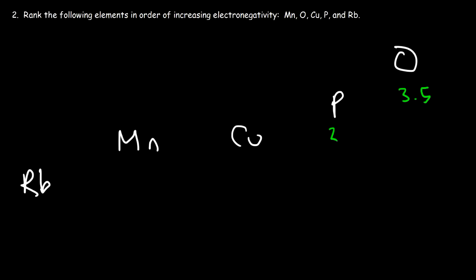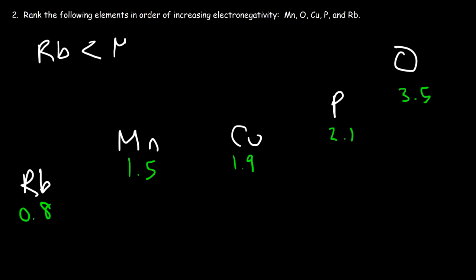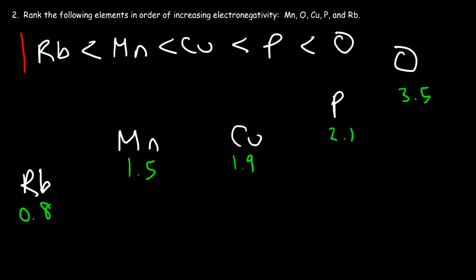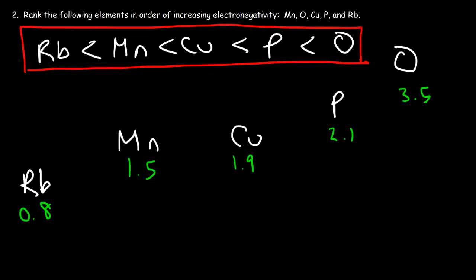The electronegativity value of phosphorus is 2.1, copper is 1.9, manganese is about 1.5, and rubidium is 0.8. Oxygen is highly electronegative and rubidium is electropositive. Ranking in order of increasing electronegativity from lowest to highest: rubidium < manganese < copper < phosphorus < oxygen.